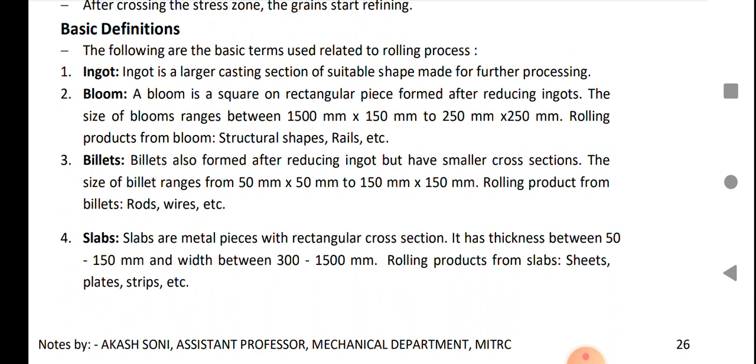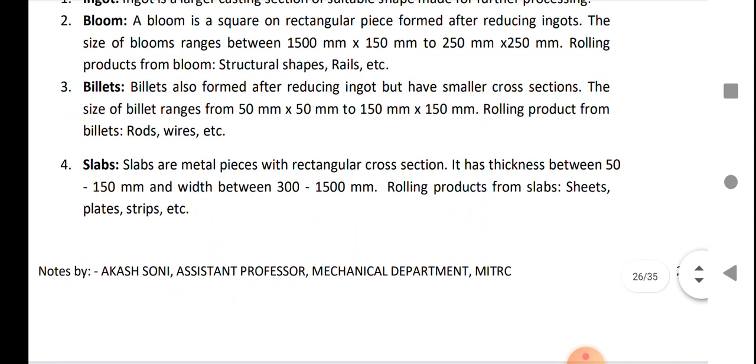Billets are also formed after reducing ingot but have a smaller cross section, 50 by 50 mm square to 150 by 150 mm square. Slabs are metal pieces with rectangular cross section. It has thickness between 50 to 150 mm and width between 30 to 150 mm. Rolling products from slab include sheet, plate, or strips. Rolling products from billet include rod or wire, and rolling products from blooms include structural shapes or rails.